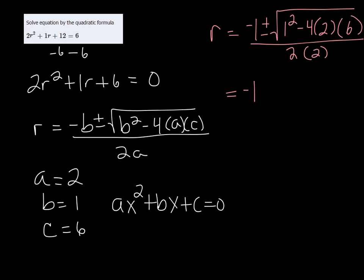So we're going to keep going with that and simplifying it from here, it's just order of operations. So it would be 1, and then 4 × 2 is 8, 8 × 6 is 48. So we have 1 - 48 all over 4.